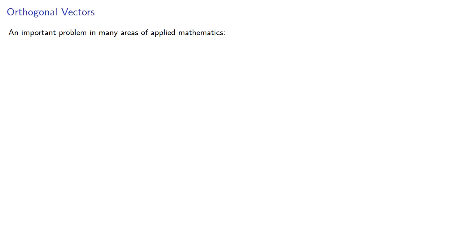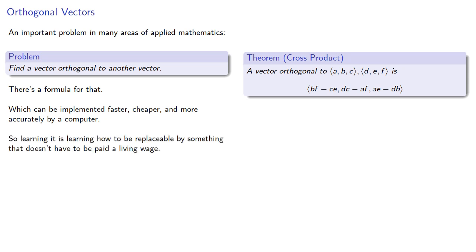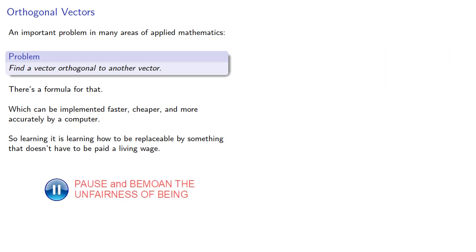An important problem in many areas of applied mathematics: find a vector orthogonal to another vector. There's a formula for that which can be implemented faster, cheaper, and more accurately by a computer, so learning it is learning how to be replaceable by something that doesn't have to be paid a living wage. Instead, what's important is creating the formula.